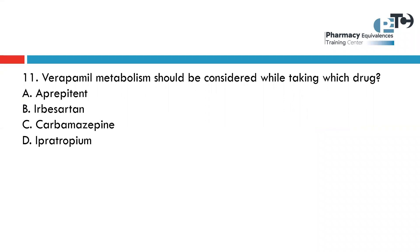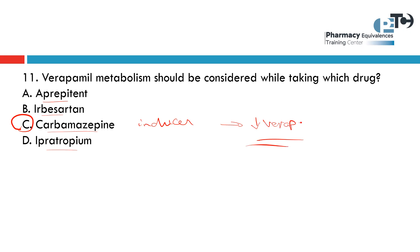The last question: verapamil metabolism should be considered while taking which drug — aprepitant, erlotinib, carbamazepine, or ipratropium? The interaction happens with carbamazepine, because carbamazepine is an inducer of the enzyme that metabolizes verapamil, leading to decreased verapamil concentration.